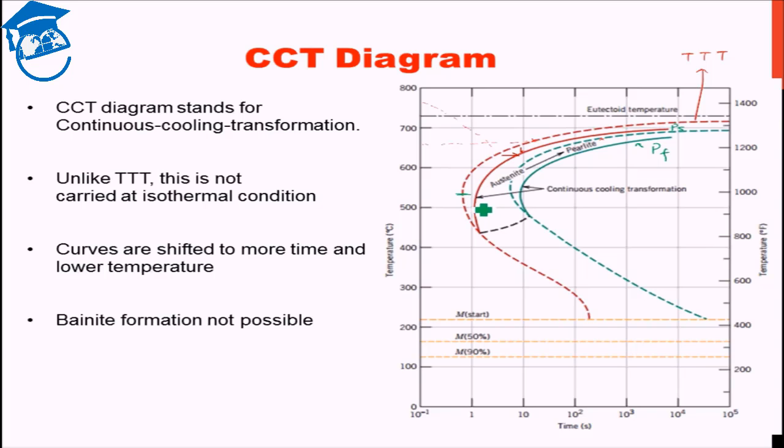So corresponding to that, we have the nose over here in the CCT curve. If you continuously cool it, then there is no way you are going to hit the start line for the bainite formation.